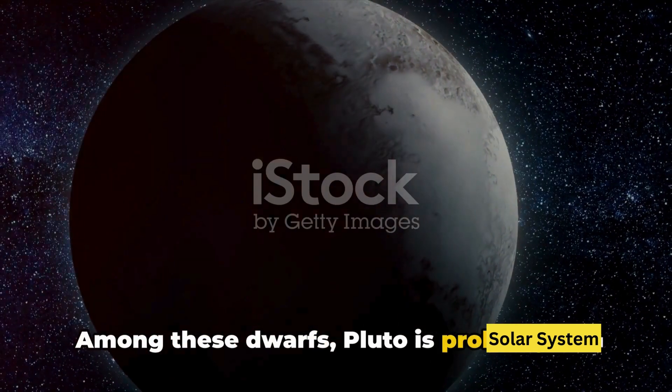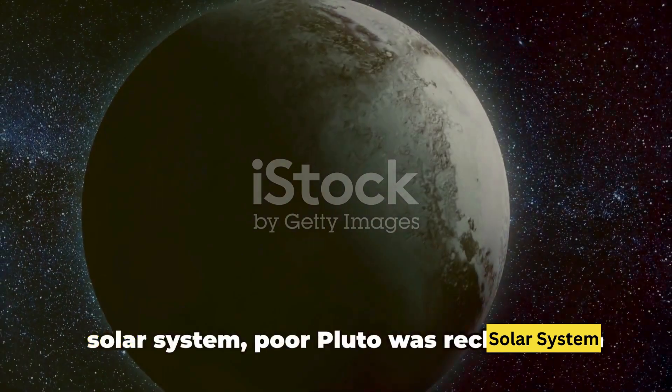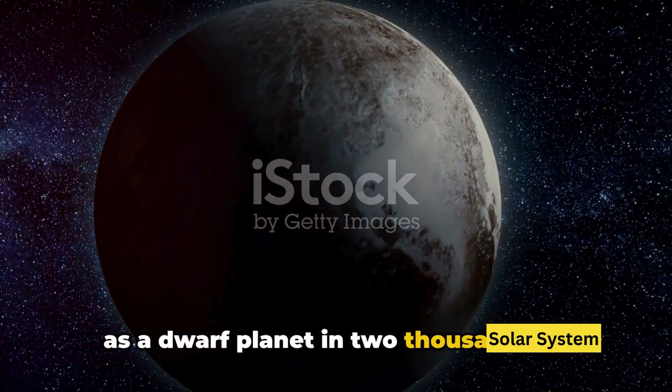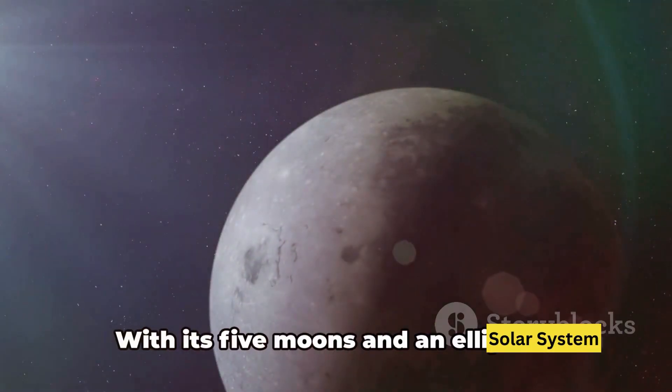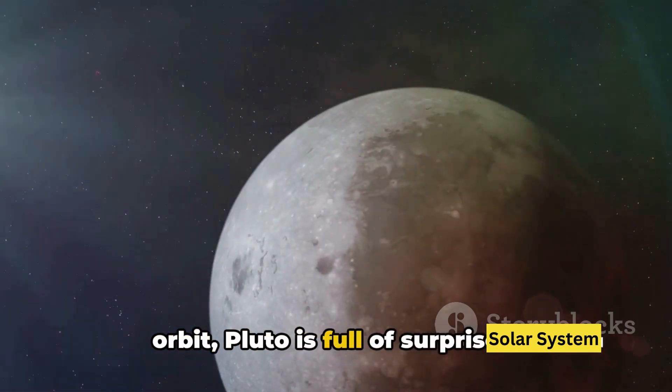Among these dwarfs, Pluto is probably the most famous one. Once considered the ninth planet in our solar system, poor Pluto was reclassified as a dwarf planet in 2006. It was a controversial decision, but it doesn't make Pluto any less fascinating. With its five moons and an elliptical orbit, Pluto is full of surprises.